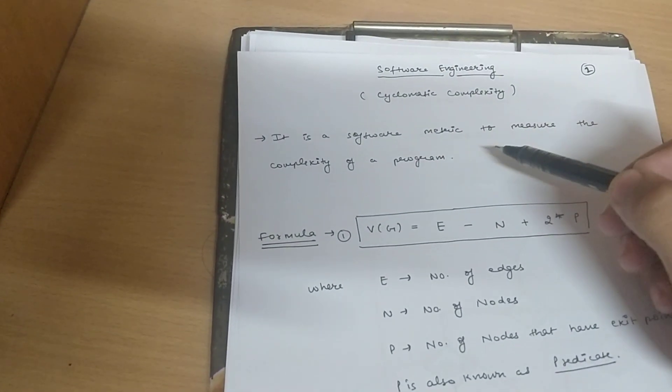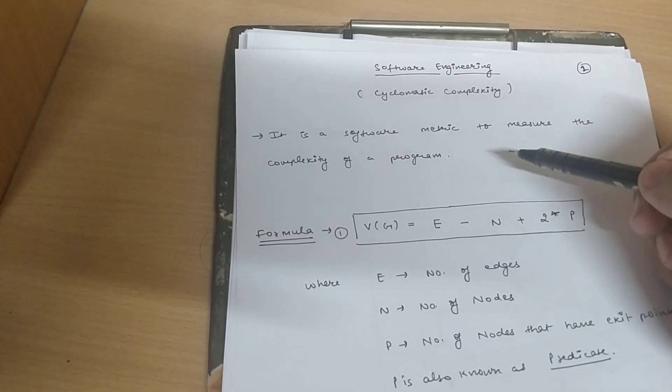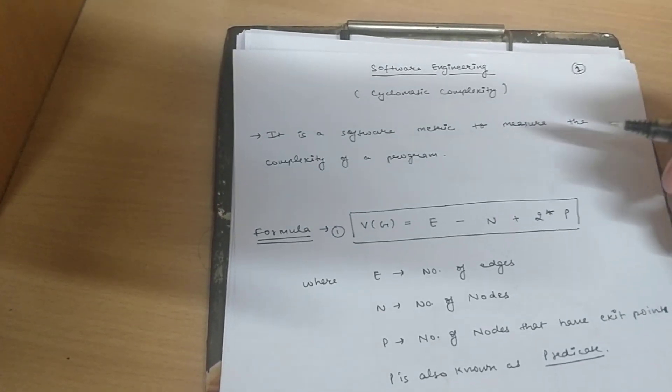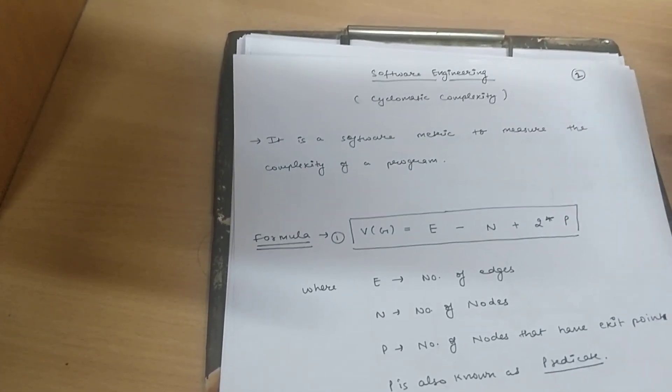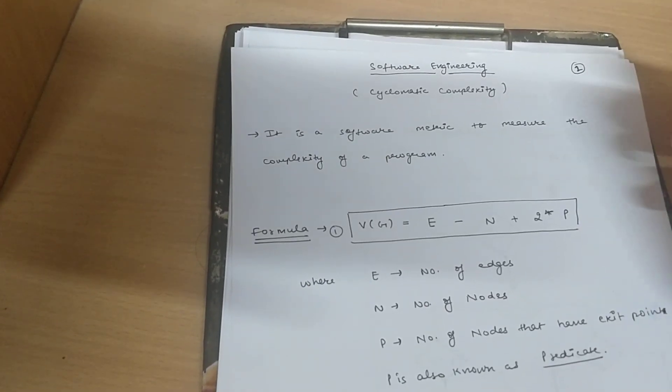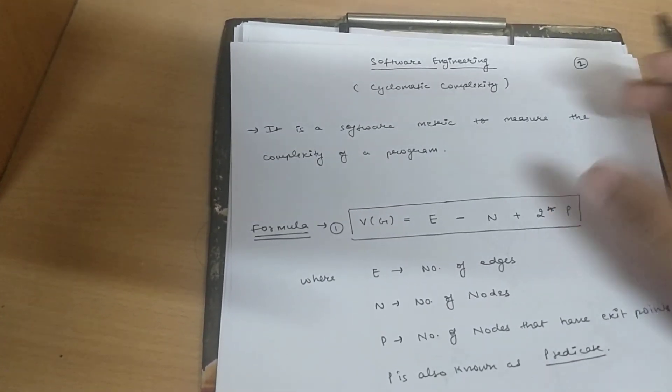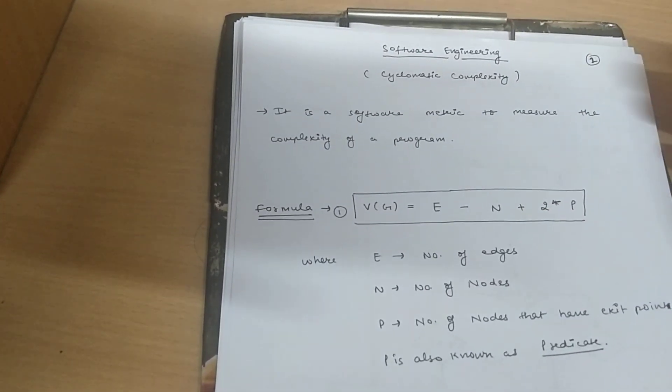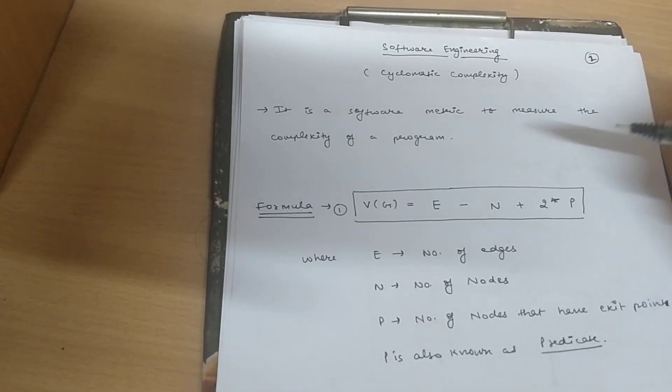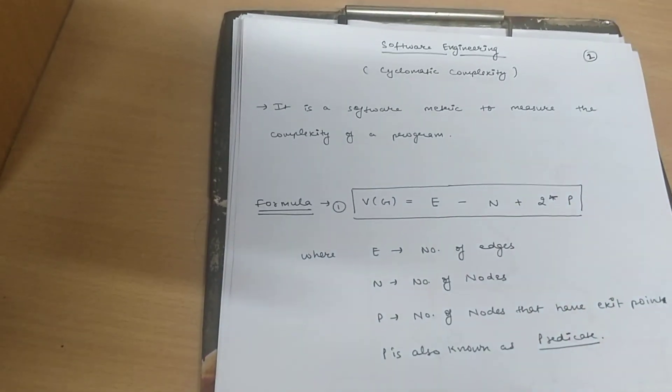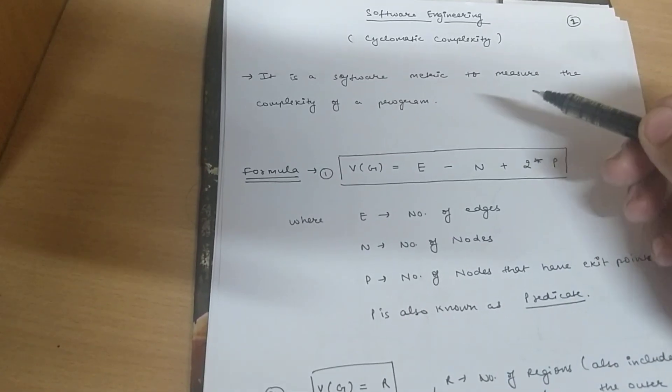It is a software metric to measure the complexity of a program. As the name suggests, Cyclomatic complexity is used to determine the complexity of a program. Basically it is termed as efficiency of a program. And how can we calculate it? There is a given formula for this Cyclomatic complexity.